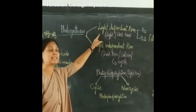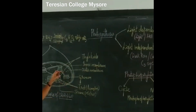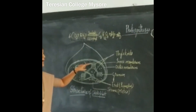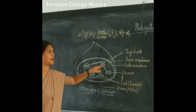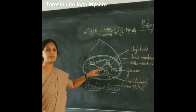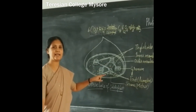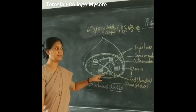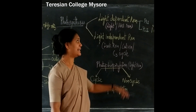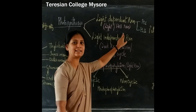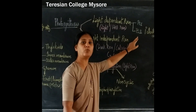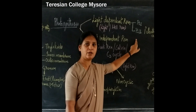Now, this light-dependent reaction, also called as a light reaction, occurs in thyloplasts. Whereas the light-independent reaction, that is the dark reaction, occurs in stroma. Light-independent reaction consists of photosystem 1 and photosystem 2.